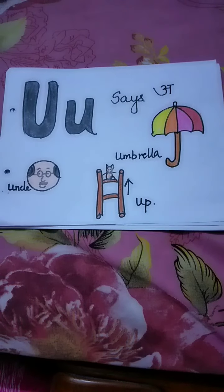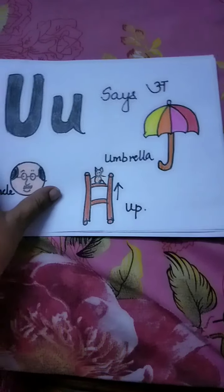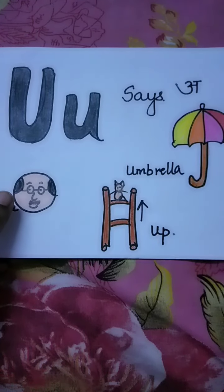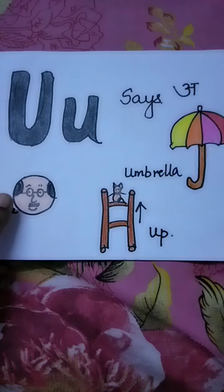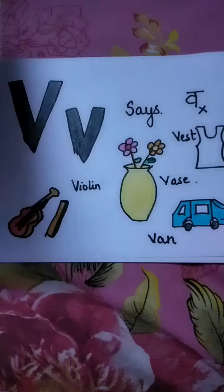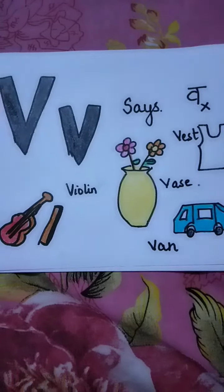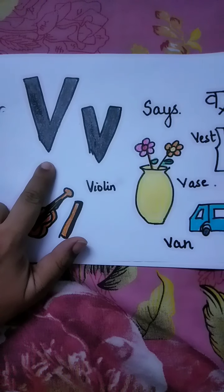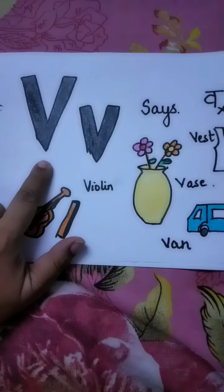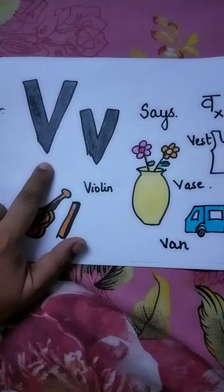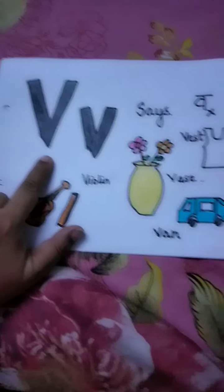What were the letters we did last time? We did U and U says A. And we did V. V says V — V for V.